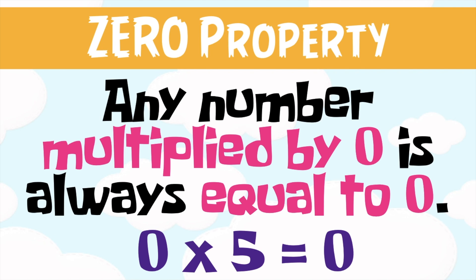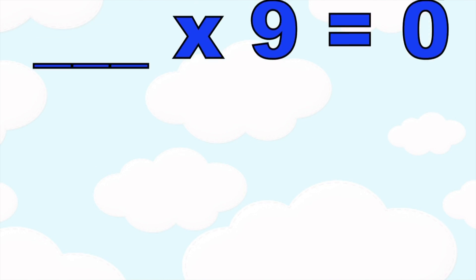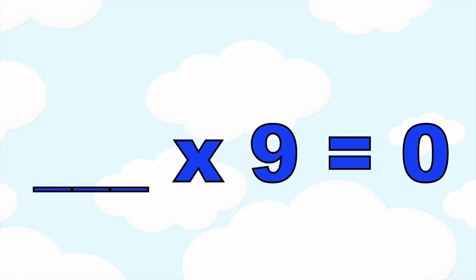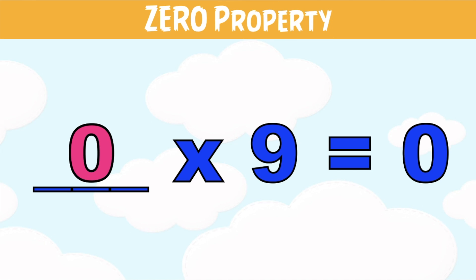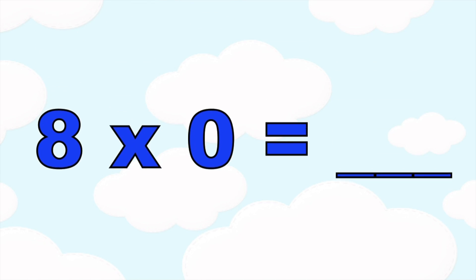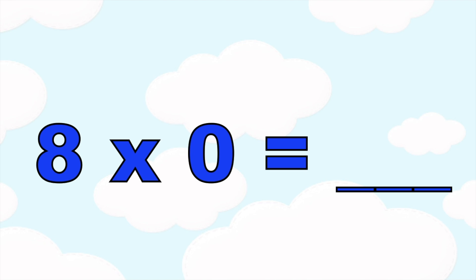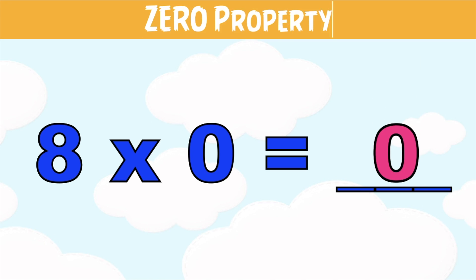For example, 0 times 5 is equal to 0. How about: blank times 9 is equal to 0 — what is the missing number? According to the zero property of multiplication, any number that you multiply by 0, the product is 0. So the answer is 0.